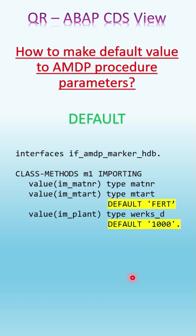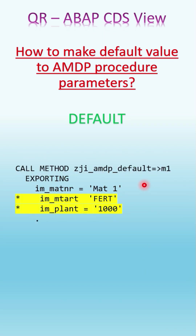In the class definition, this is the way we add default values. This is my class method M1 — it has three importing parameters, and two of them have default values: the material type and the plant. These can be overwritten once you call your AMDP method from the calling program. From the program perspective, when you call the class and method name, it automatically generates the program code for you, and it recognizes that two of the three importing parameters are added with default values.